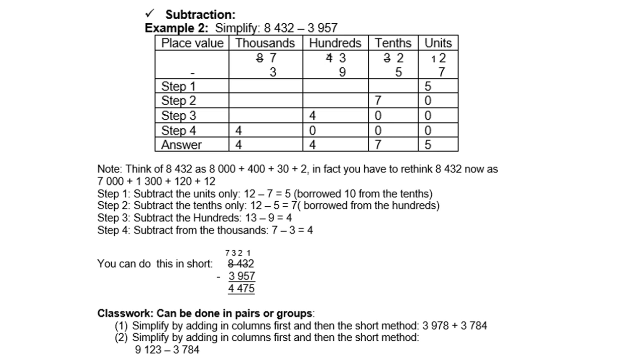Then 5 cannot be taken away from 2. Again, I must borrow so that I can have now in the next column something bigger. Now I have 12. So 12 minus 5 is 7. Then again, I must borrow. That is how you do it. You borrow each time.